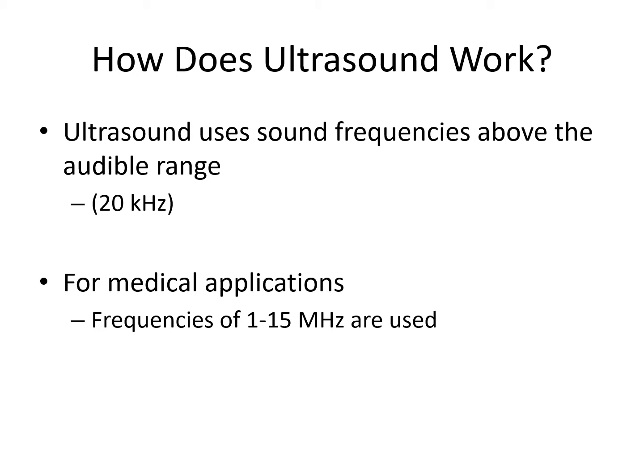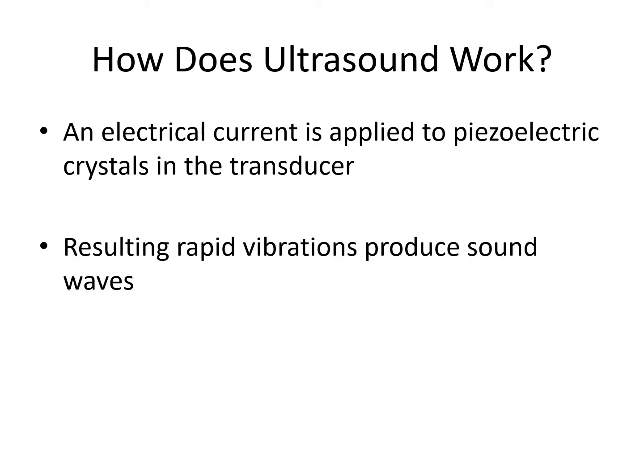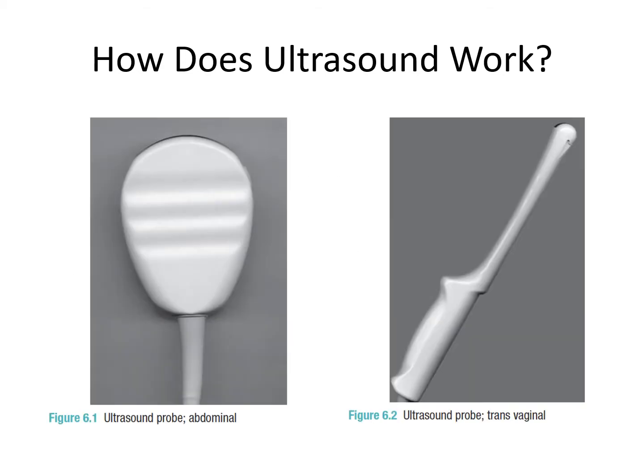First let's discuss how ultrasound works. Ultrasound uses sound frequencies which are above the audible range, hence the term ultrasound. The audible range tends to be up to 20 kilohertz, and for medical applications we're using much faster sound waves in the region of 1 to 15 megahertz, or millions of Hertz. These sound waves are created through application of electricity to ultrasound transducers or probes, which contain piezoelectric crystals, resulting in very rapid vibrations which produce the ultrasound waves.